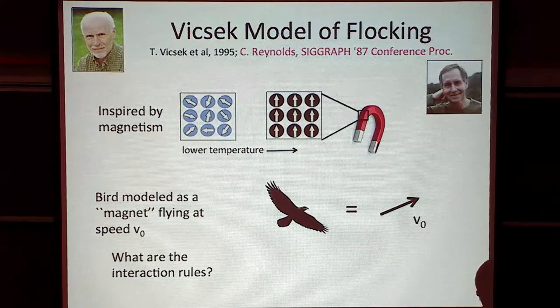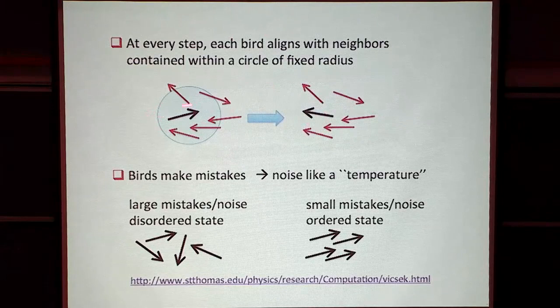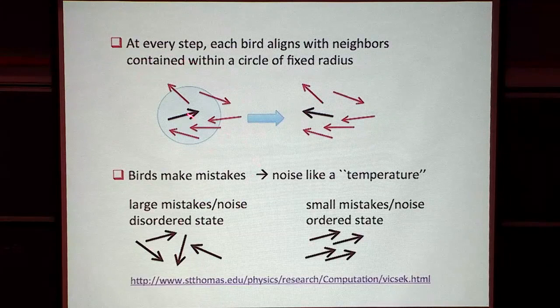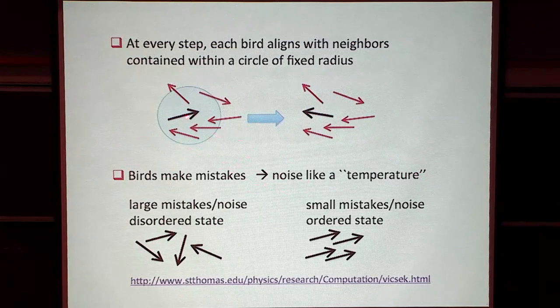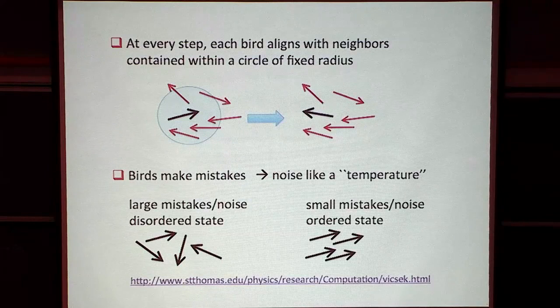If I'm going in the opposite direction to my neighbors, I will correct and align with them, then go on in that direction, and at the next time step check my neighborhood again and repeat. However, birds make mistakes — so this alignment is not perfect. There is noise in the problem. The noise is the size of the mean of the mistakes birds make, and it acts like temperature does in a real material.